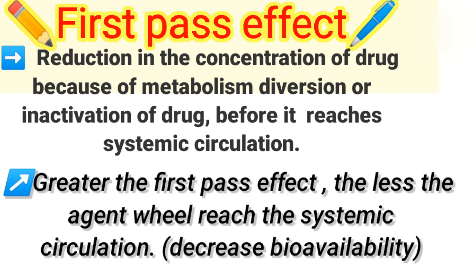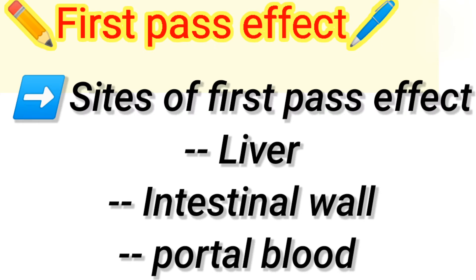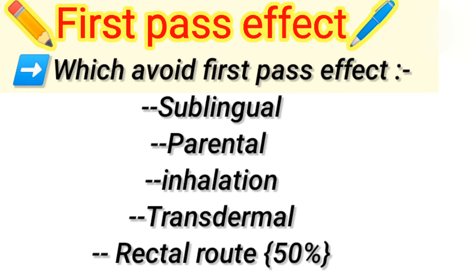The sites of first pass effect are: the liver, which is the most important site, the intestinal wall, and the portal blood.